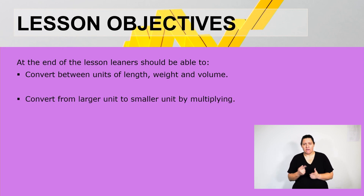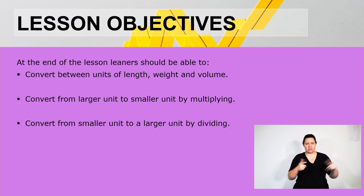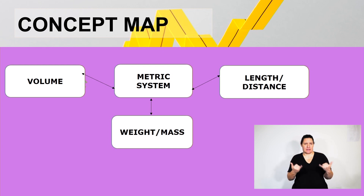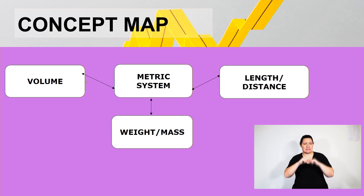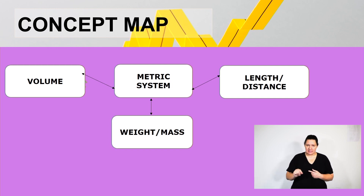Convert from a larger unit to a smaller unit by multiplying, and convert from a smaller unit to a larger unit by dividing. We will be working with the metric system and we have divided this topic into three sections: length or distance, weight or mass, and volume.